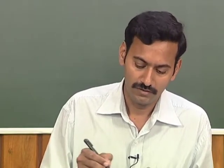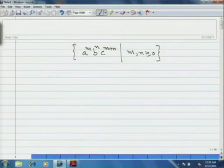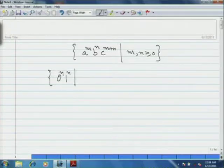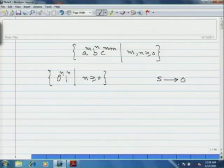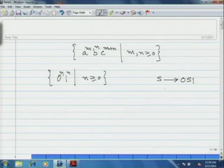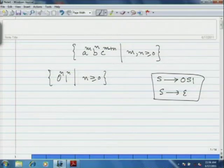For example, if you recollect the grammar for the language {0^n 1^n | n ≥ 0}, the grammar we introduced uses the rules S → 0S1 and S → ε. These two rules generate the language 0^n 1^n for n greater than or equal to 0.